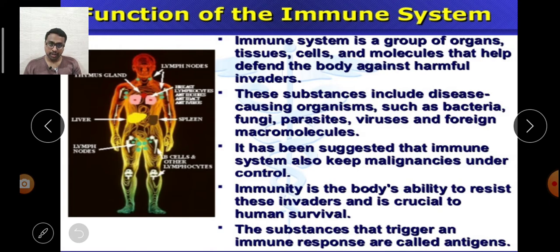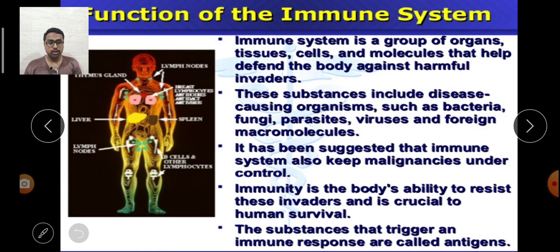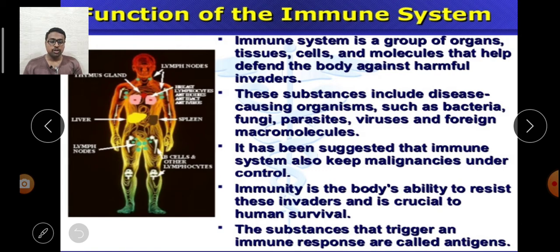Another aspect of immunology concerns the substances or factors which pose a risk to the body. These include disease-causing organisms, also referred to as pathogens — for example, bacteria, fungi, and parasites. Apart from them, viruses, foreign macromolecules, or even certain chemical substances can also damage tissue, invade the body, and harm homeostasis. These are the two aspects of immunology.